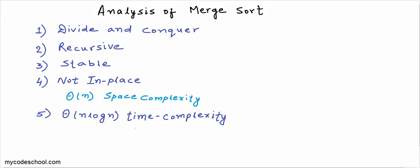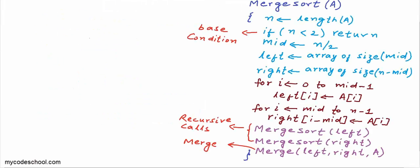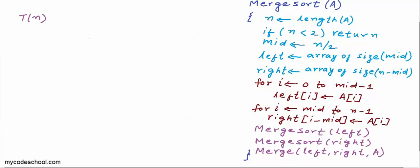Let us now deduce and understand the time and space complexity of merge sort. We have the pseudocode for merge sort that we wrote in the previous lesson. Let us say the time taken for an array of size n is T(n). In time complexity analysis, we always try to approximate the worst case and see the rate of growth for very high values of n, then classify it as big O or theta of some common function.